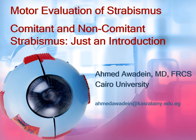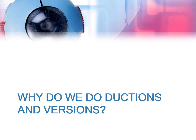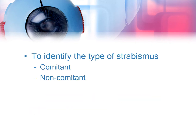This is a brief introduction to why we need to do motor evaluation in strabismus and how motor evaluation differentiates the comitant from non-comitant type. The fundamental part of any ocular motor evaluation is to do ductions and versions. Ductions and versions allow us to identify the type of strabismus, whether comitant or non-comitant.